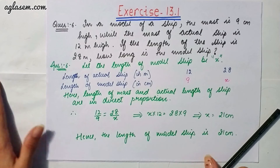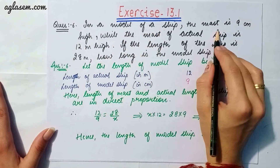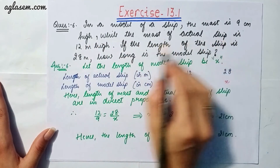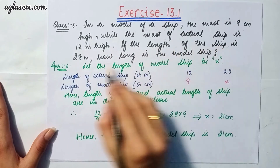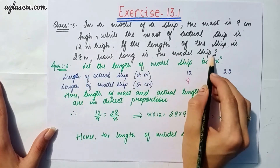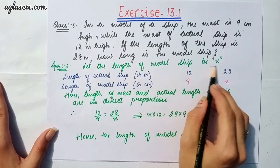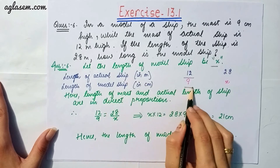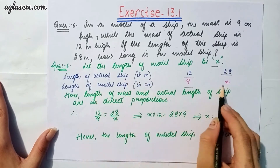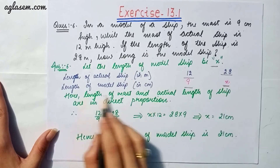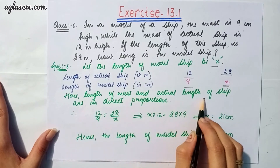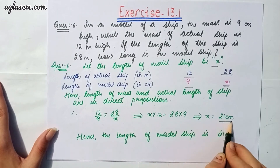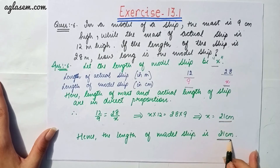Question 6: In a model of a ship, the mast is 6 cm high while the mast of the actual ship is 12 meters high. If the length of the ship is 28 meters, how long is the model of the ship? Let the length of the model ship be x. The length of the mast and the actual length of the ship are in direct proportion. Solving the equation, we get x = 14 cm. So the model ship is 14 cm.